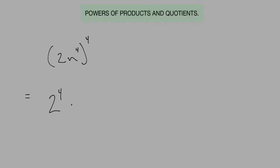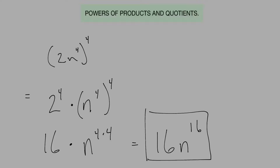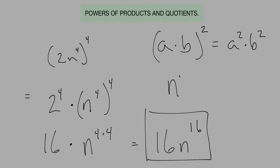Another problem that looks very similar — you're starting to see a pattern. We get two to the fourth times n to the fourth raised to the fourth power. Two to the fourth: two times two is four, times two is eight, times two is sixteen. So we get sixteen times n to the four times four. That gives us sixteen times n to the sixteenth power.